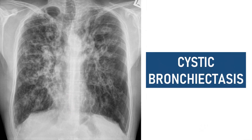The features suggest cystic bronchiectasis. It is one of the less common morphological forms of bronchiectasis, characterized by saccular dilatation of bronchi that extends to the pleural surfaces.